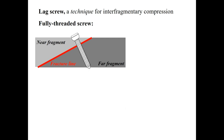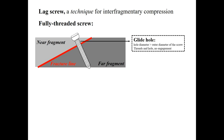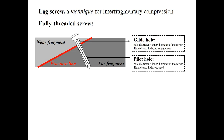Lag screw is a technique that provides interfragmentary compression across a fracture line. The principle of lag screw states that the threads must only engage in the far part to compress the fragments. A lag screw is inserted perpendicular to the fracture line. To insert a fully threaded screw as a lag screw, the near fragment is drilled with a diameter higher than the outer diameter, so that the threads gain no engagement with the bone in this portion. For the far fragment, the hole is drilled with the same diameter as the inner diameter, and after tapping, the threads gain purchase inside this portion.